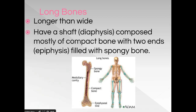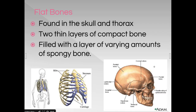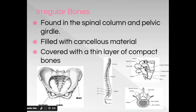Flat bones are found in the skull and in the thorax — the chest. A characteristic of flat bone is that it's made of two thin layers of compact bone with varying amounts of spongy bone in between. Think of it as a sandwich: the two pieces of bread are the compact bone and the filling is the spongy bone. You find flat bones most commonly in the ribs and in the skull.